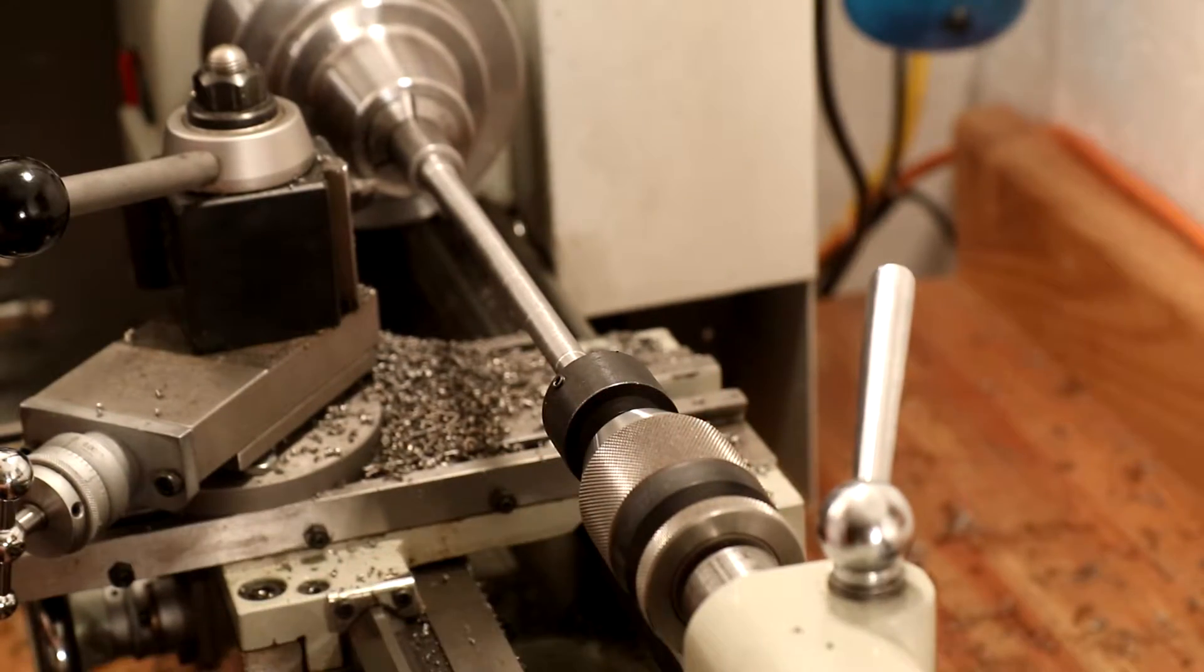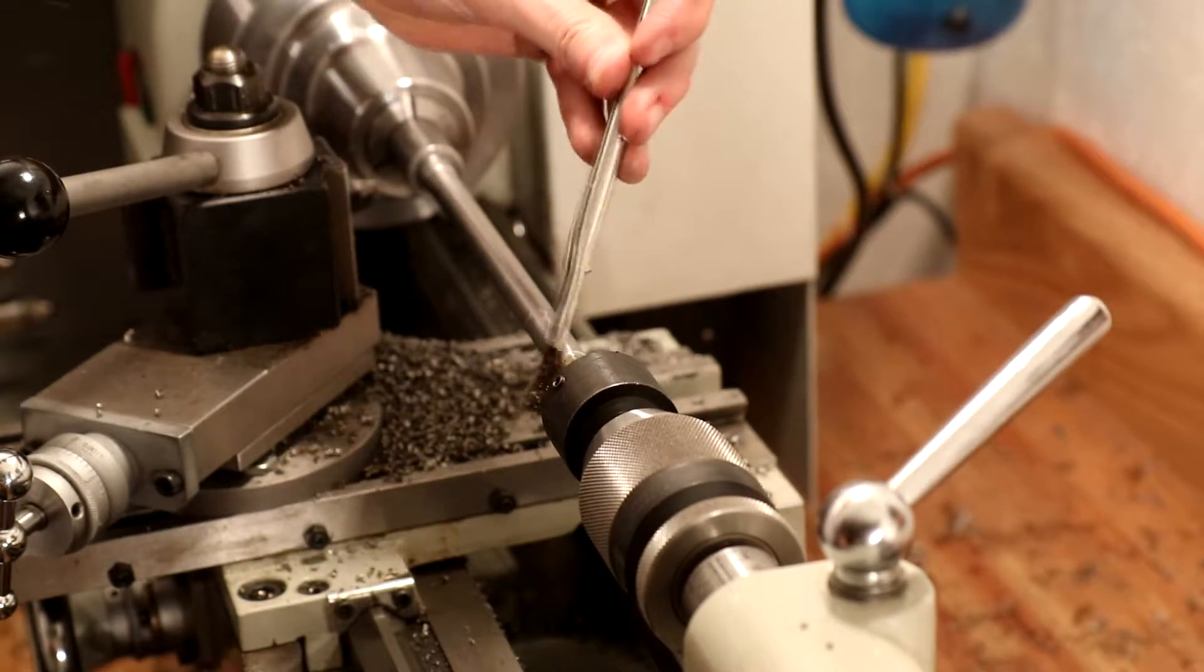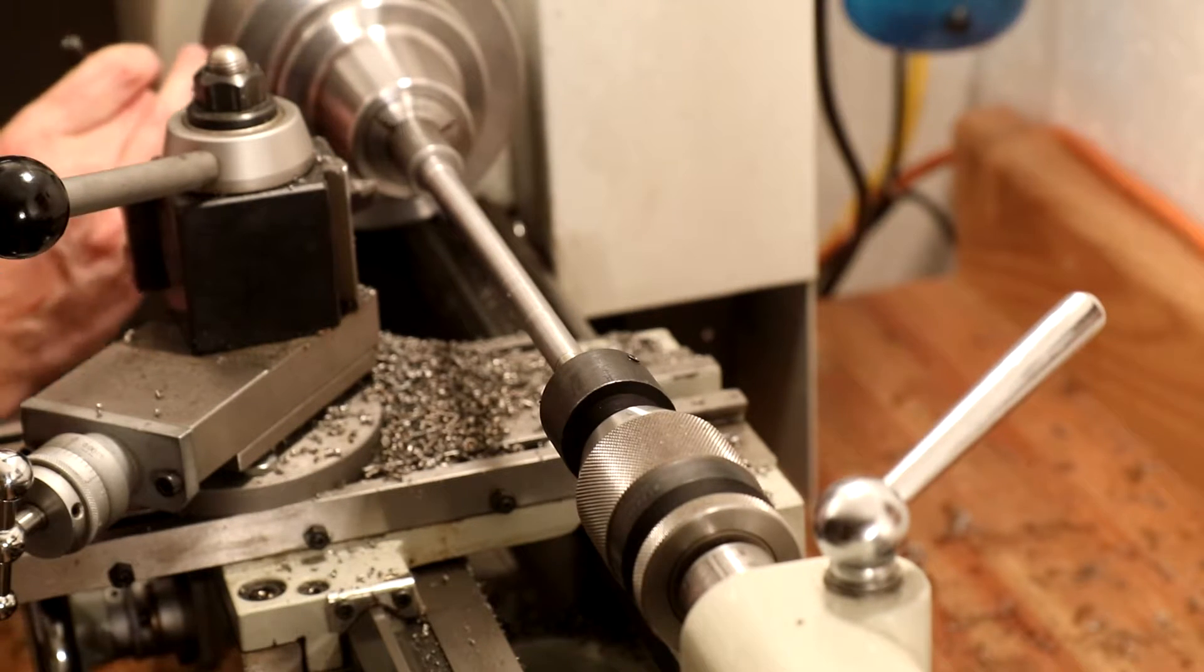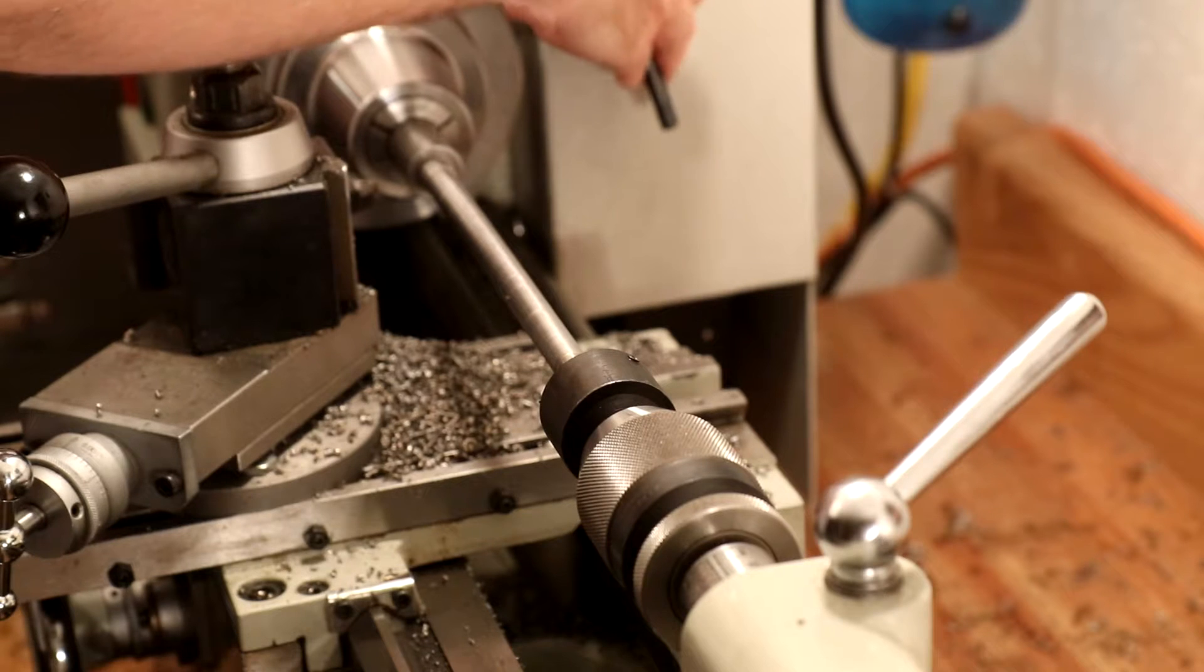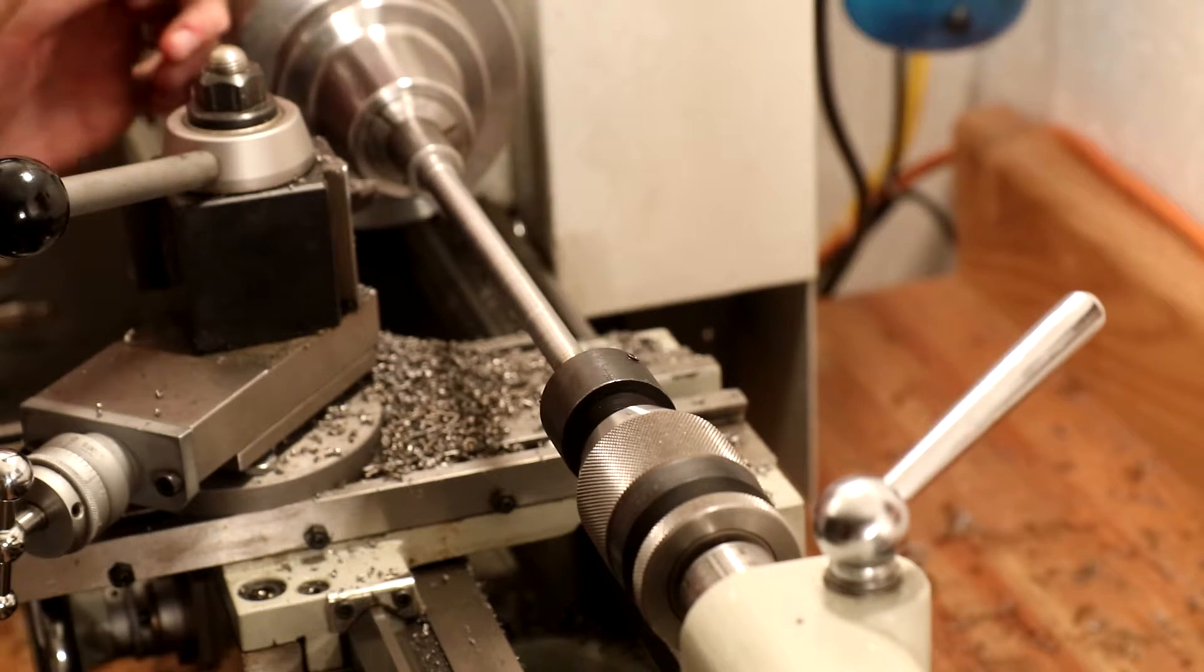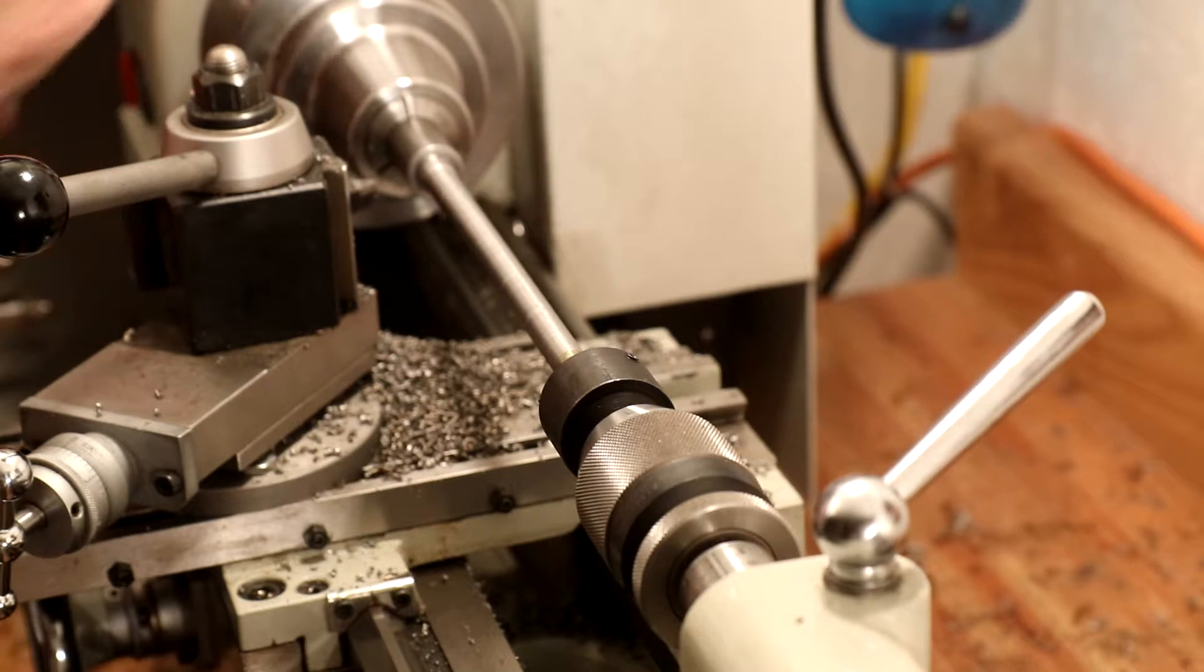During experimenting with the CNC conversion on the lathe, I removed the acme lead screw. And the acme lead screw is necessary in order to do threading. So right now, I don't have threading capability on the lathe. For threading, I'm using a die which is held on a holder, which is then held in the drill chuck and the tailstock.